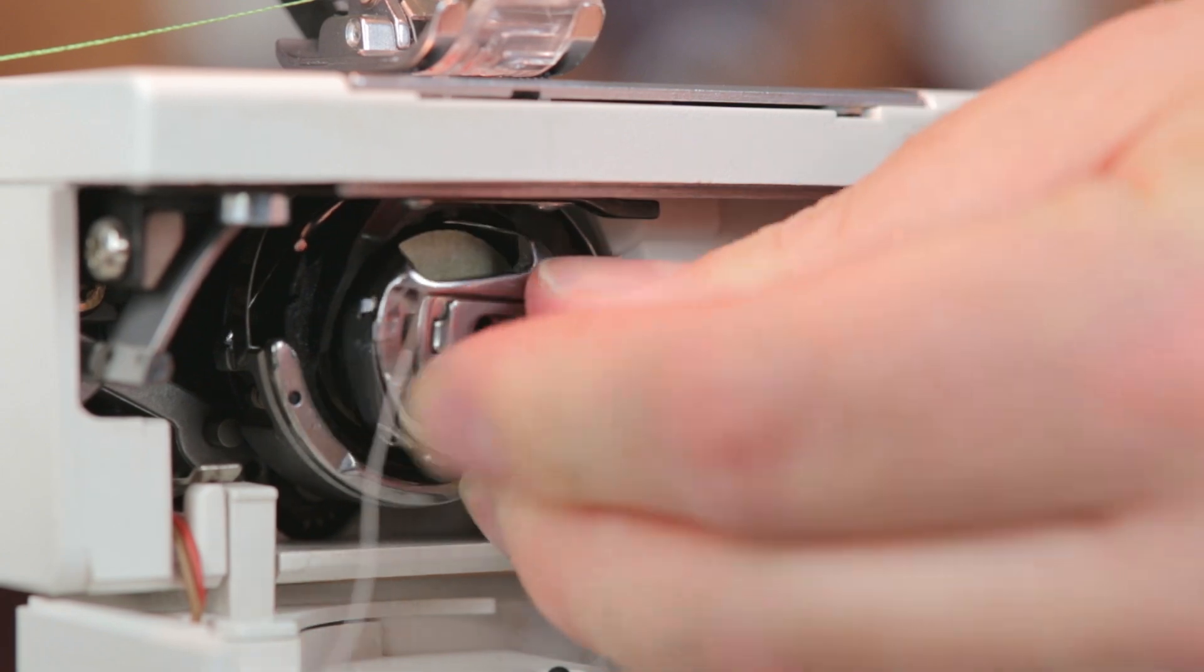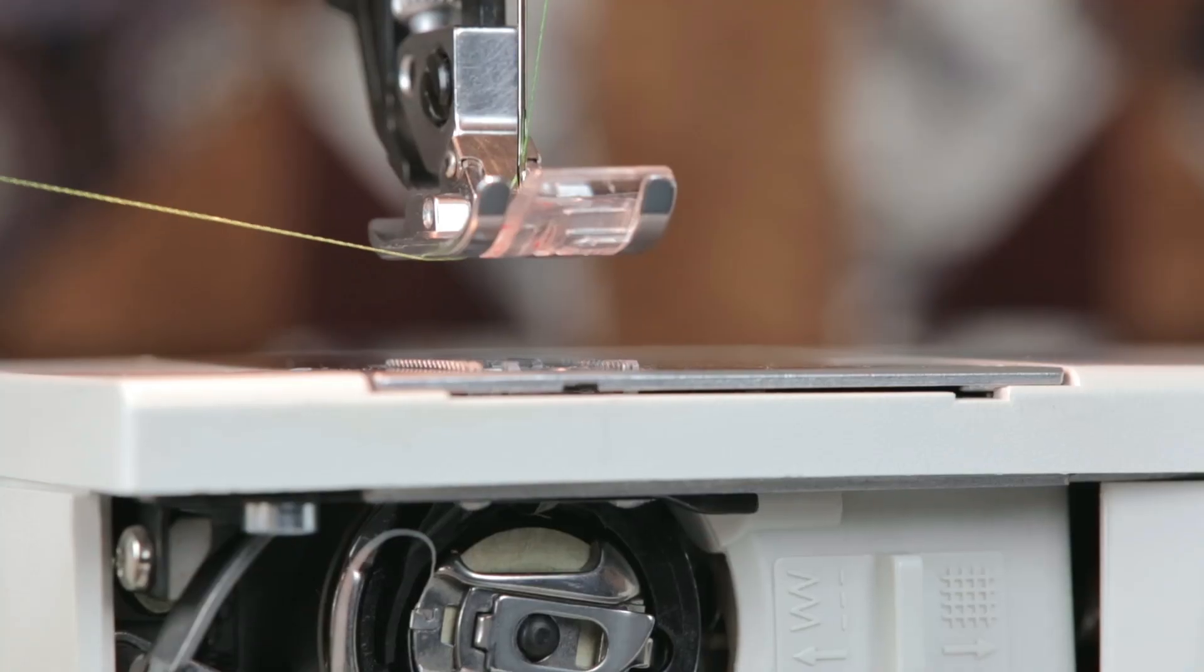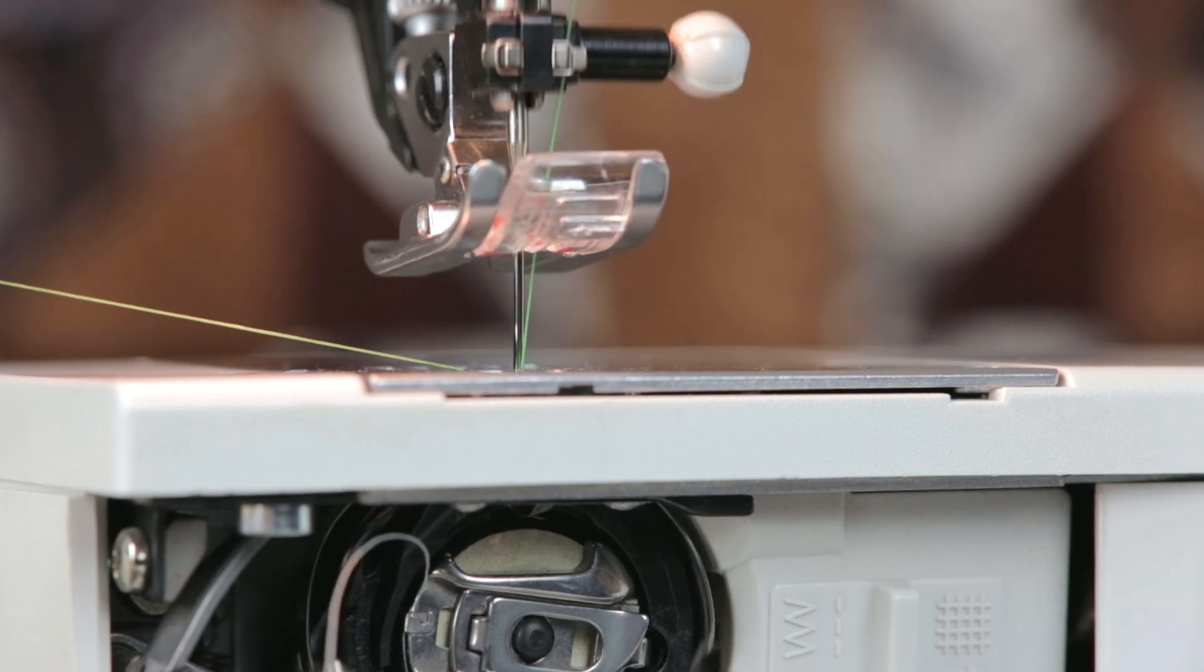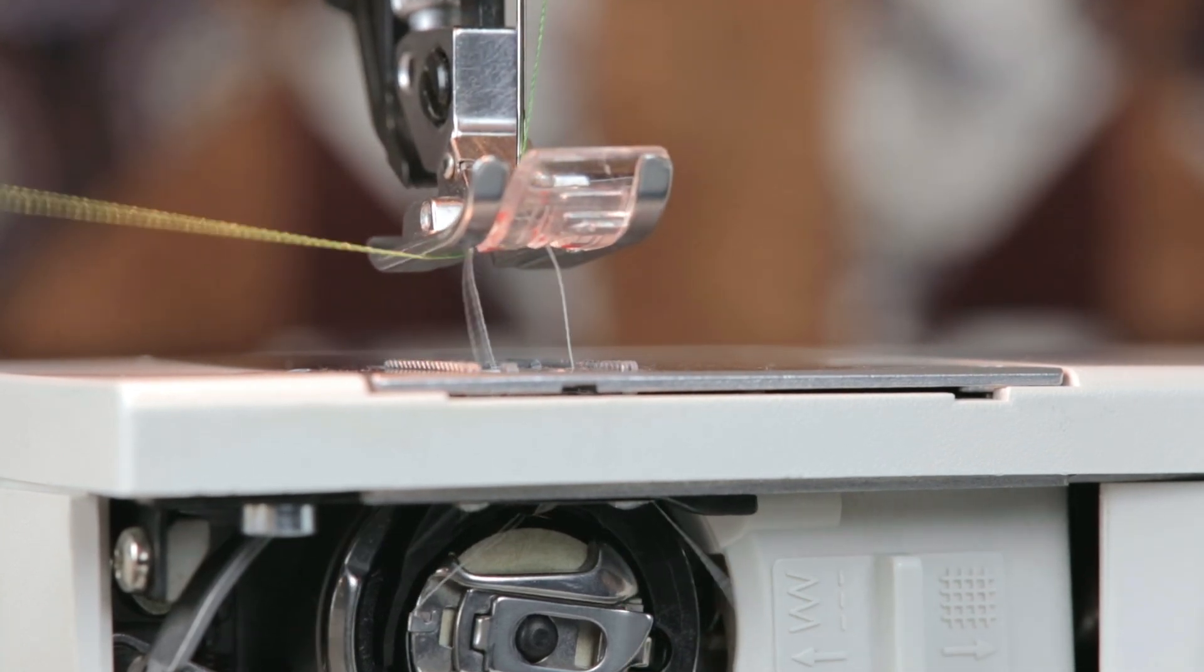Insert the bobbin case into your machine and pull the bobbin thread up. You need to pull up the bobbin thread to start the first loop before your fabric is in your machine.